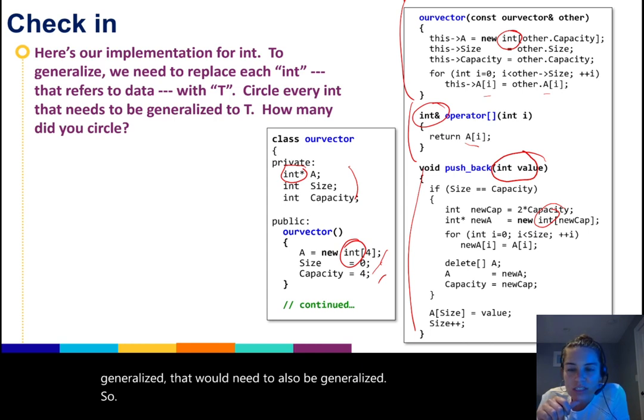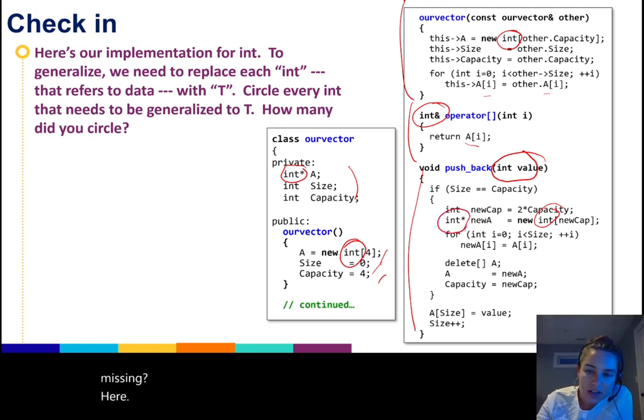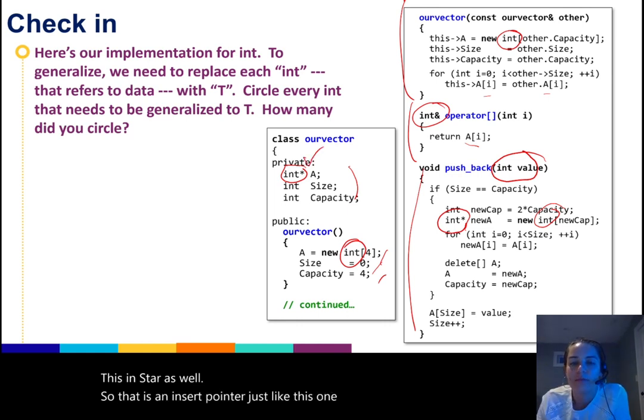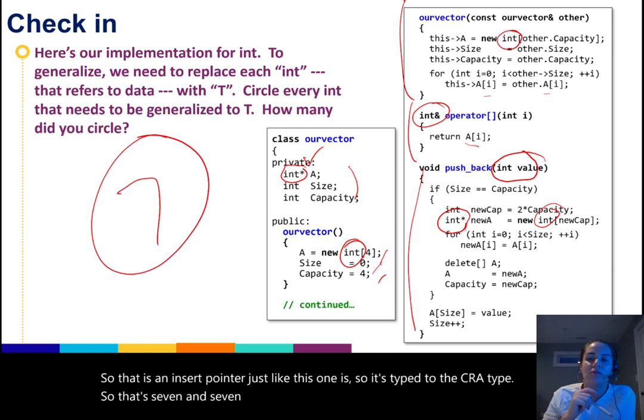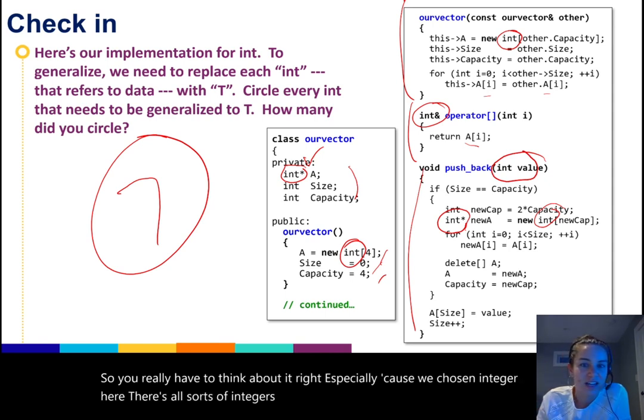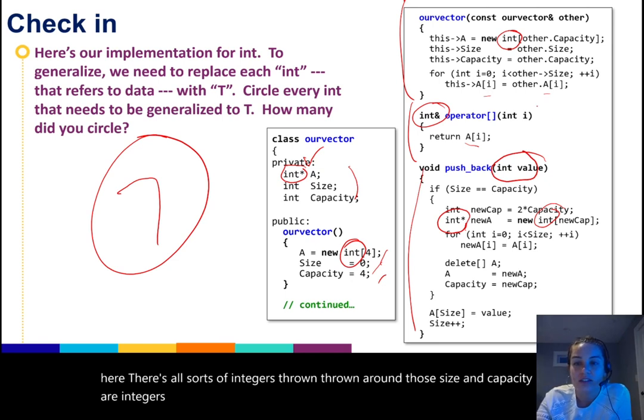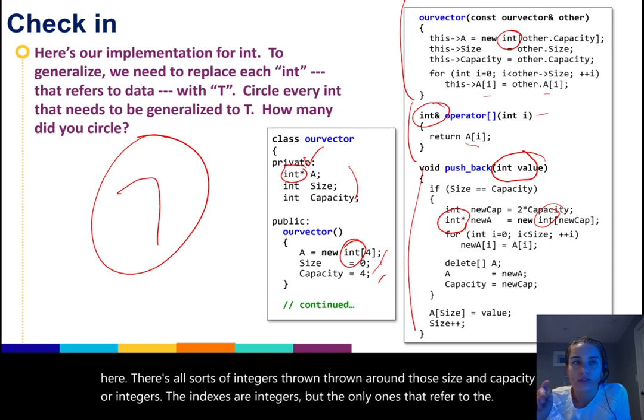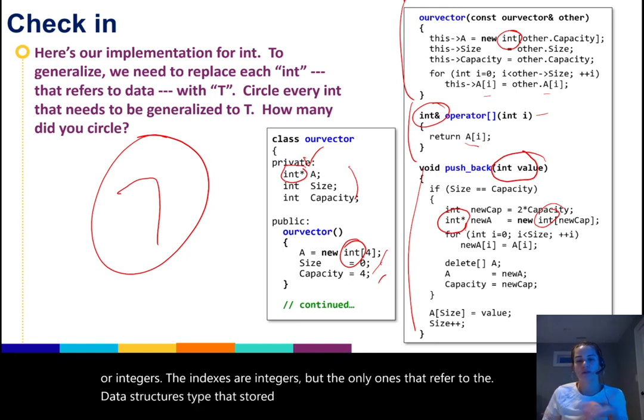So wait, that's actually only six. There should be one more. Oh, this int star as well. That is an int star pointer, just like this one is. So it's typed to the C array type. That's seven. And seven is the right answer for how many there are total. You really have to think about it, especially because we chose an integer here. There's all sorts of integers thrown around. The size and capacity are integers. The indexes are integers. But the only ones that refer to the data structure's type that's stored in each element is the ones circled.